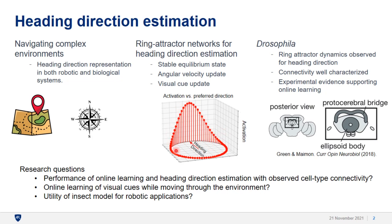For updating a heading direction estimate when turning, this bump needs to move. In network models, neurons encoding angular velocity can shift this bump, and neurons encoding visual cues can move the bump based on landmark features.